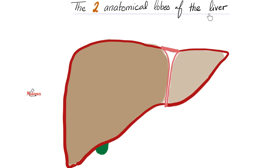How many borders does the liver have? The answer is three: an upper border, a lower border, and a right border. How many surfaces does the liver have? The answer is five: superior surface, inferior surface, interior surface, posterior surface, and number five is the right lateral surface, also known as the quadrilateral surface.